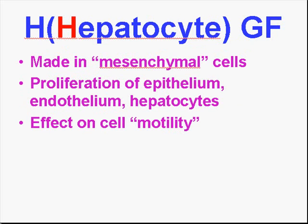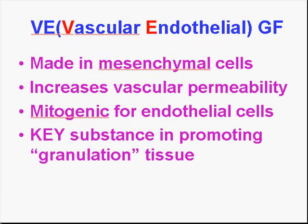There is hepatocyte growth factor, which has a direct effect on hepatocytes, but it was also discovered in epithelium. It's made in mesenchymal cells — connective tissue cells, not epithelial cells. So here's a case, like we see in embryology, where the connective tissue is producing substances to differentiate the epithelial-like tissues. Hepatocyte growth factor, HGF, also has an effect on cell motility.